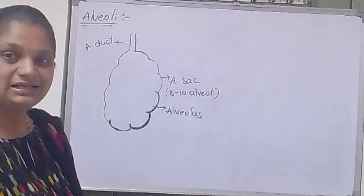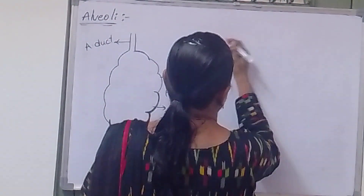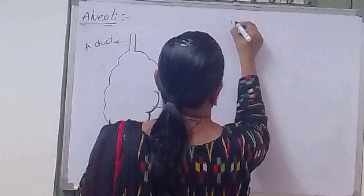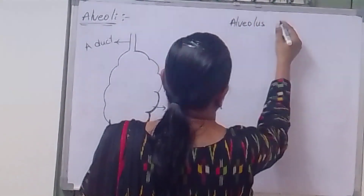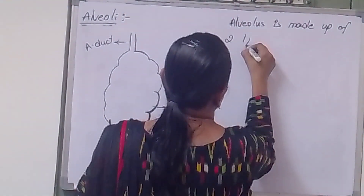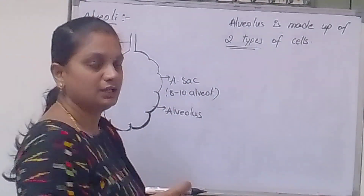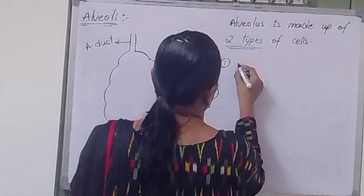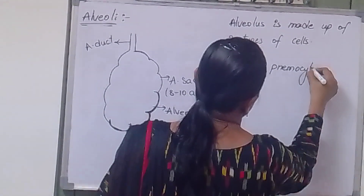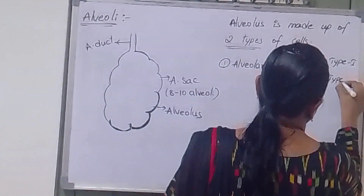If you observe the detailed structure of alveolus, the alveolar sac is made up of 2 types of cells. They are alveolar pneumocytes — Type 1 and Type 2.